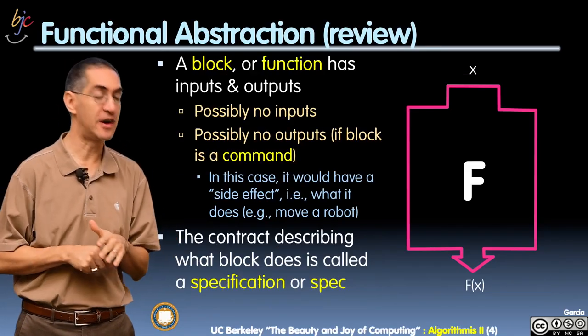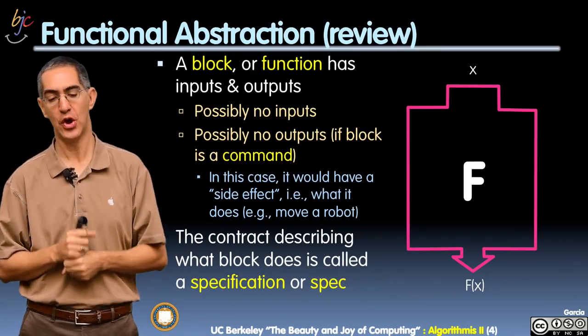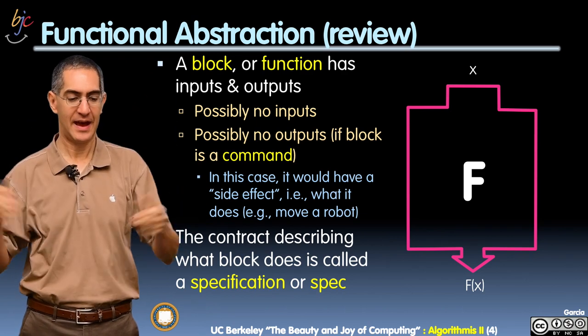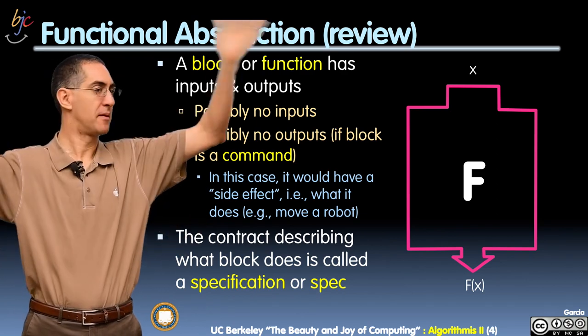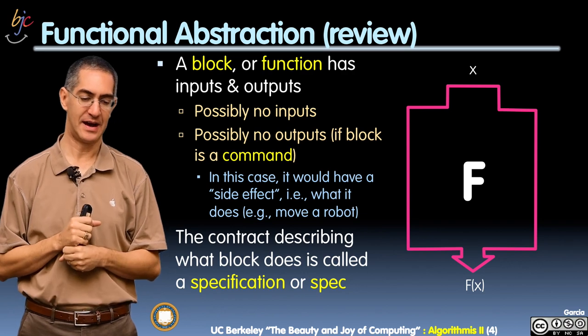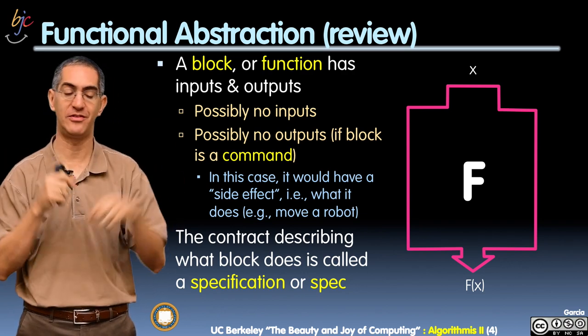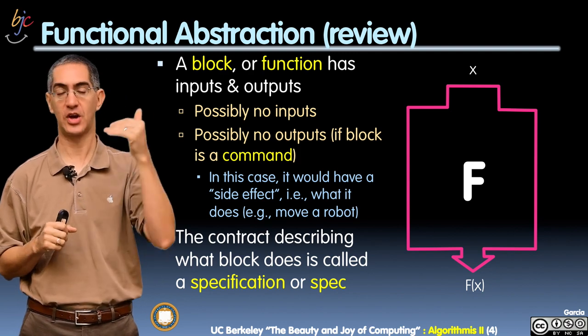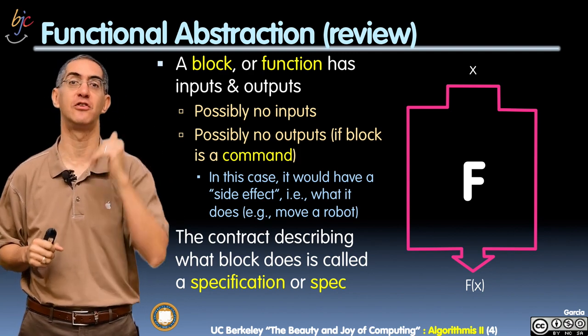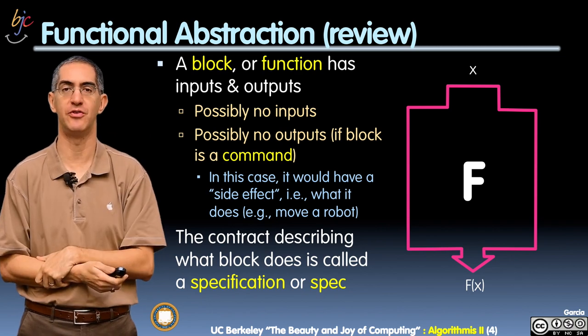This is a review of functional abstraction. You know that a block has inputs and outputs, zero or more inputs, exactly one output. If it has no outputs at all, it's a command, and it's a puzzle piece shape. The contract, what that function is going to do, is called a spec or a specification. This is all review.